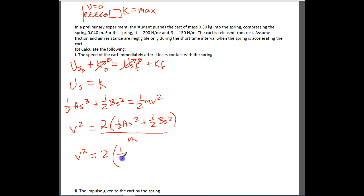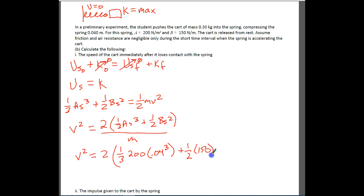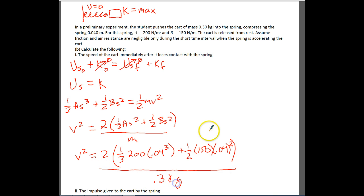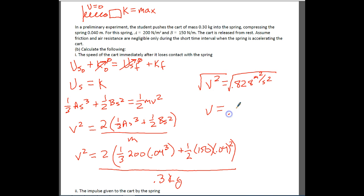Substituting values: V² = 2 × [(1/3)(200)(0.04)³ + (1/2)(150)(0.04)²] / 0.3. This gives V² = 0.828 m²/s². Taking the square root, the speed just after release is 0.91 m/s.